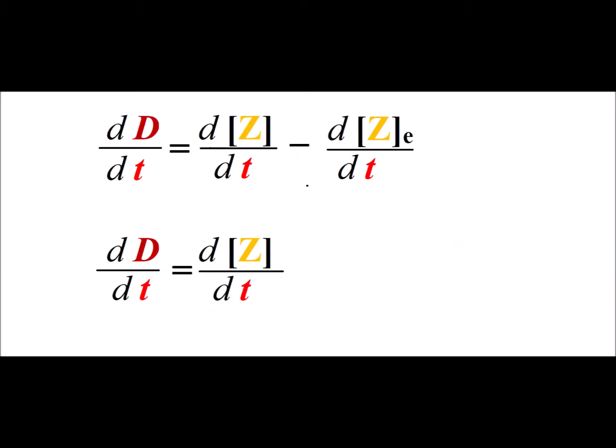To find dD dt, we already know that we define D to be the concentration of Z minus its equilibrium concentration. So therefore, we just apply the properties of derivatives to give dZ dt minus dZ equilibrium dt. And since Z sub e is a constant, that particular derivative drops out. So we get that dD dt is equal to dZ dt.